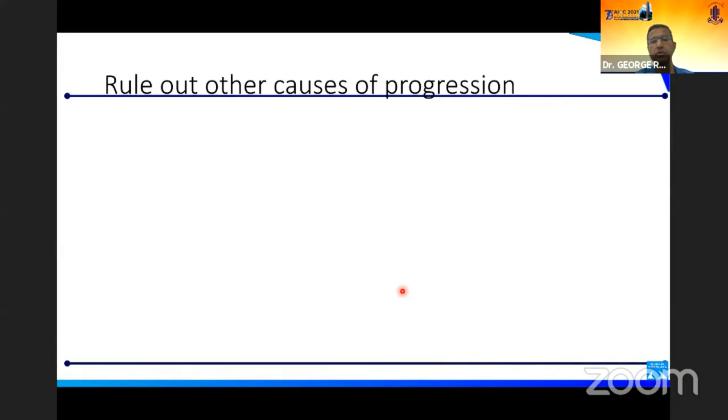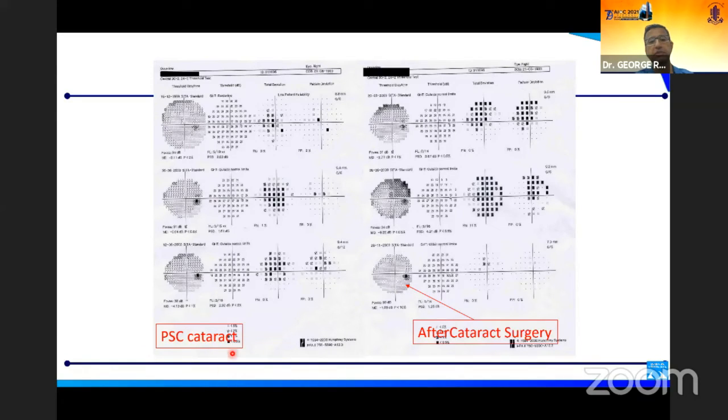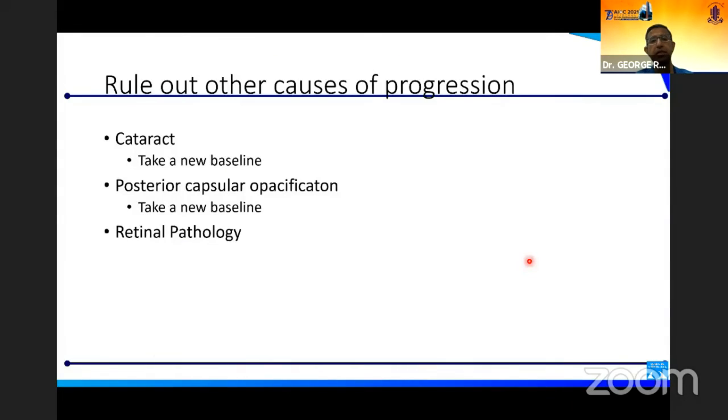It's important that you rule out other causes of progression too. The commonest other cause of progression is somebody like this: post-hader, post-serial subcapsular cataract, and you're seeing the visual fields are steadily getting worse. Then you have cataract surgery here and it becomes absolutely normal. So if you have any significant change such as cataract surgery, glaucoma surgery, or laser for diabetic retinopathy, you may need to take a new baseline.